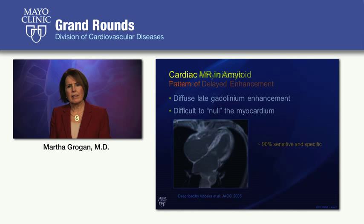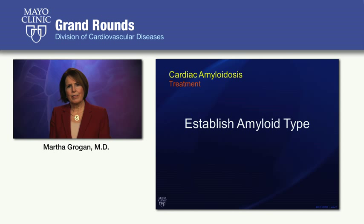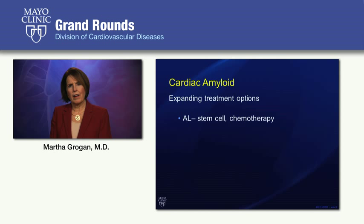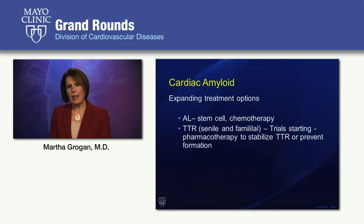Regarding treatment, the hallmark is to establish the amyloid type, as treatment varies tremendously depending on type. For AL amyloid, we have autologous stem cell transplantation as well as a variety of chemotherapeutic regimens. For senile and familial amyloid, trials are starting with molecules that stabilize transthyretin or prevent its formation, thereby preventing fibril formation. Familial patients with transthyretin cardiac amyloidosis can also be treated with liver transplantation.